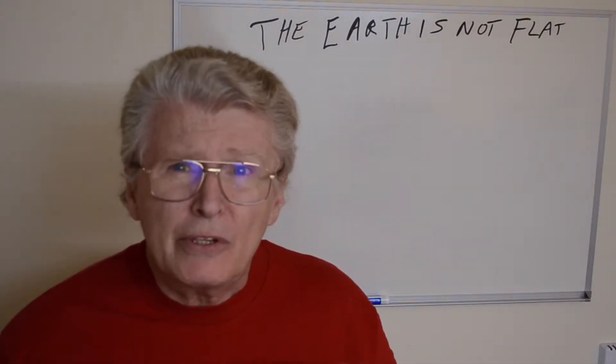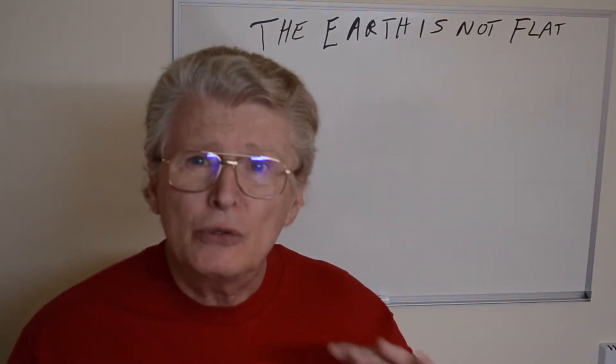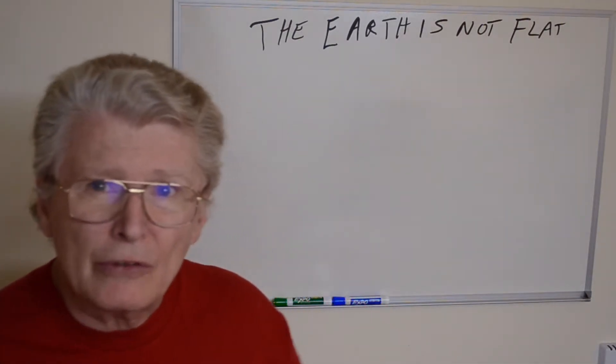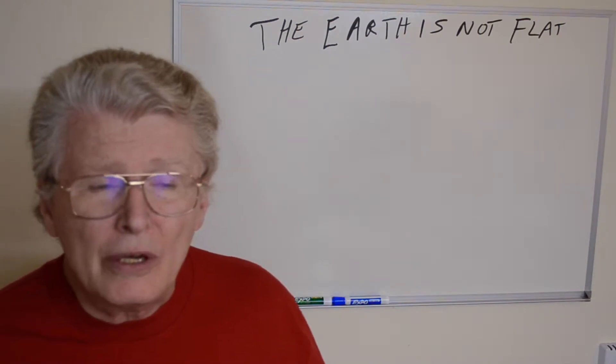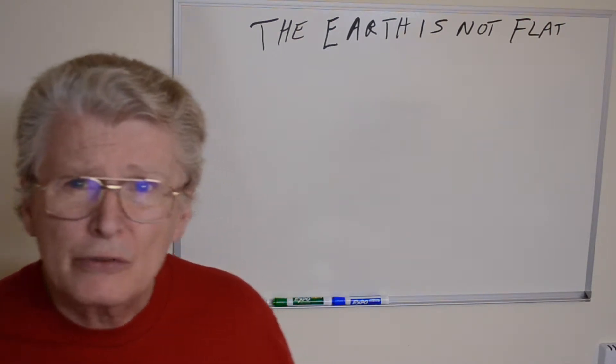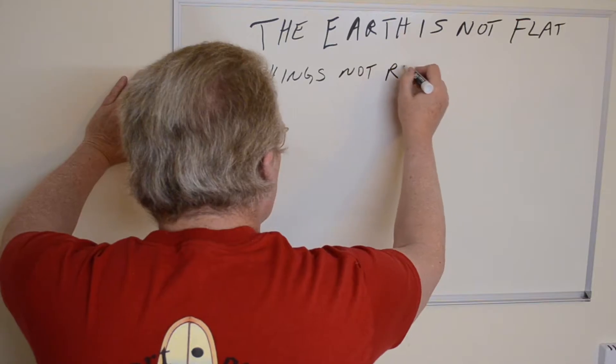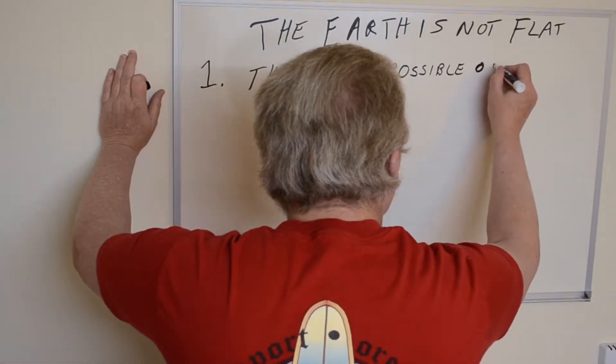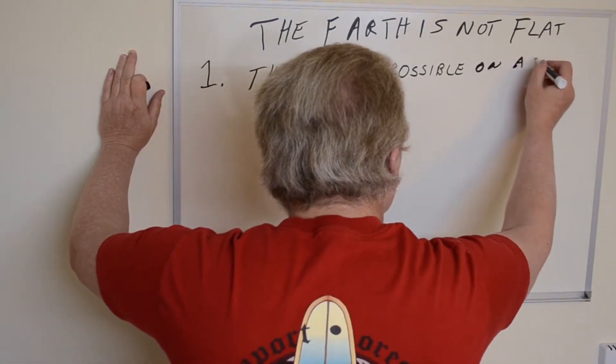Basically, I'm going to use two topic areas, two different argument areas or lines of argument, to cover this topic. The first one will be things not possible on a flat earth.